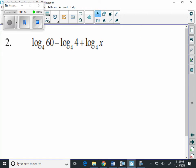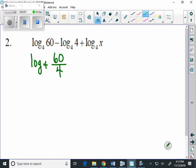Problem number 2 has subtraction and addition in the problem. I'll start with the first two. Subtraction is going to cause us to divide. This is going to be log base 4 of 60 divided by 4 plus log base 4 of x. Remember our goal, we're trying to condense. We're trying to write this so that we only have one logarithm in the problem.